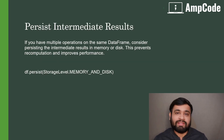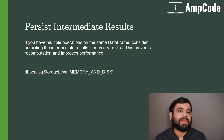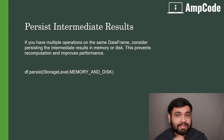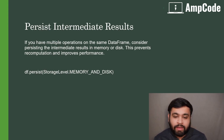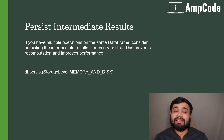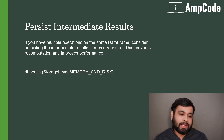To improve Spark execution, you should persist intermediate results. If you have multiple operations on the same DataFrame, caching and persisting are powerful operations for improving execution. If you have redundant multiple operations on the same DataFrame, you should consider persisting the intermediate result in memory or on disk. Persisting in memory reduces the read/write overhead, and using persist or cache prevents recomputation and improves the performance of your Spark application.